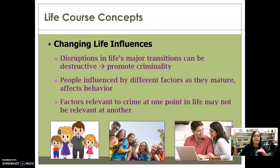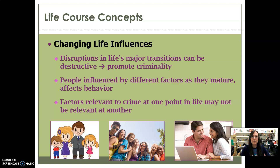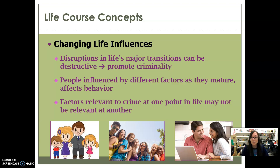Factors relevant to crime at one point in life may not be relevant at another. If you have a major transition — like moving from childhood into adolescence, or something like a death in the family — and it doesn't go well, that can cause major problems and promote criminality. In general, it's the idea that it's not always the same people who will influence us. Once you're an adult, what your friends think isn't that big of a deal. But when you're an adolescent, that's a pretty important influence.